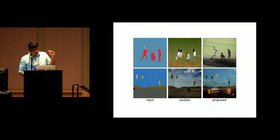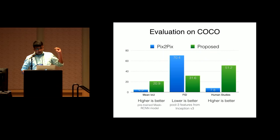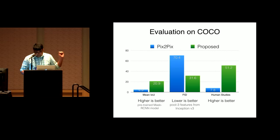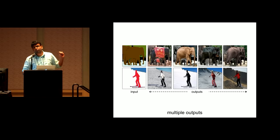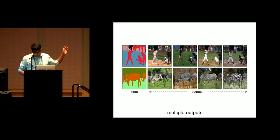We compare our approach with Pix2Pix and other recent methods. We use different evaluation criteria such as pre-trained segmentation models to study segmentation on generated images, FID score, and human studies. The proposed approach works better on all measures. Importantly, our approach can get multiple outputs very easily. More results show different configurations of baseball players and zebras in different possible environments.